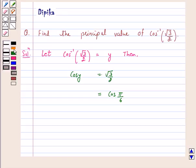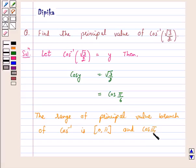Now, we know that the range of the principal value branch of cos inverse is the closed interval 0 to pi, and cos pi by 6 equals root 3 by 2.